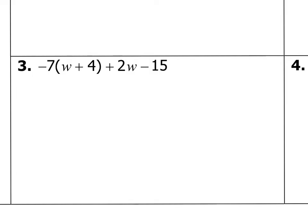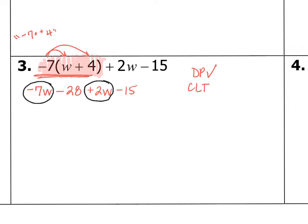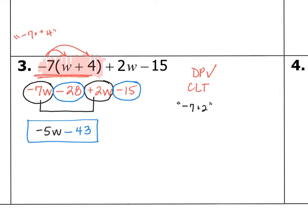Let's take a look at number 3. We do have the distributive property right here. You can locate it with the parentheses and the outside multiplier really easily. We're going to distribute that negative 7. So, negative 7 times w is negative 7w. And then negative 7 times a positive 4, which makes negative 28. So, negative 7w minus 28. Bring down plus 2w and minus 15. Now, we're going to combine like terms. We've got two sets of w-like terms. I should be thinking negative 7 plus 2 to combine negative 7w plus 2w to get negative 5w. Next, I'm combining minus 28 with minus 15 to get minus 43.